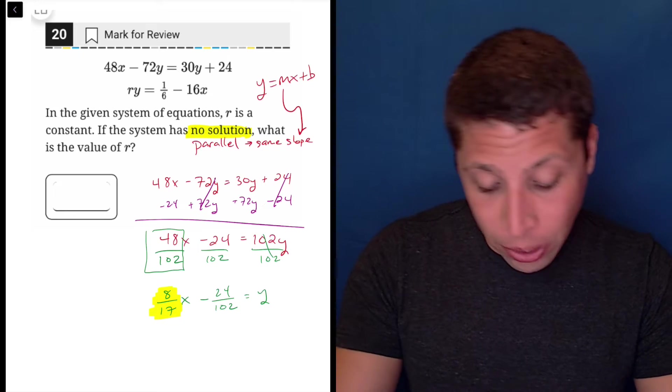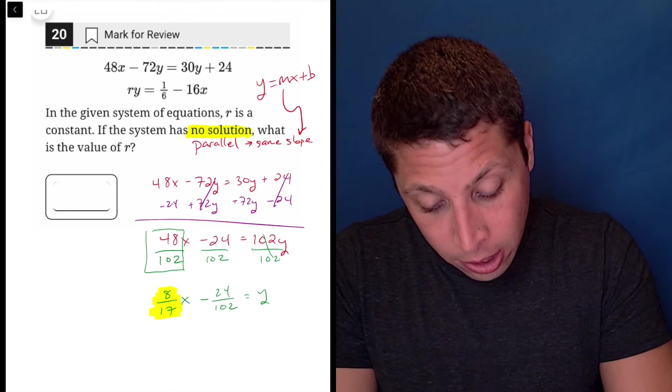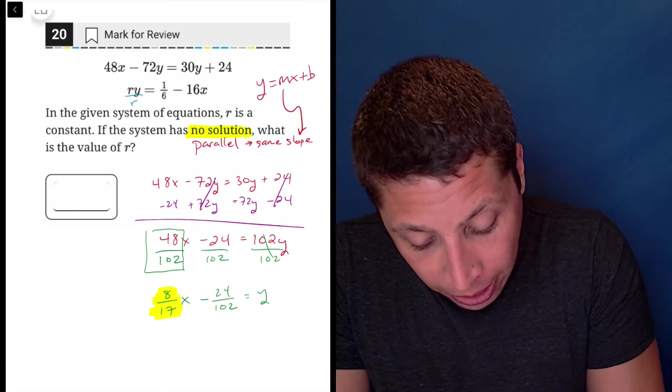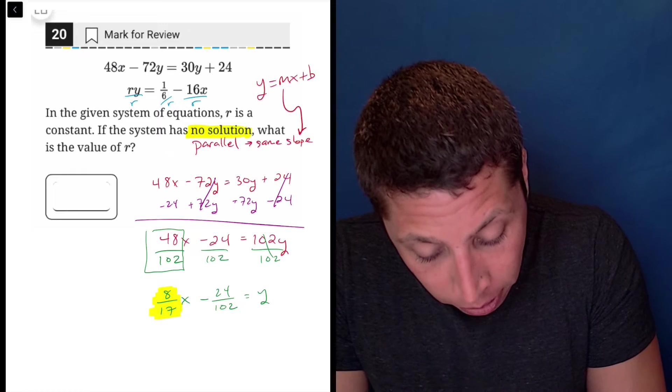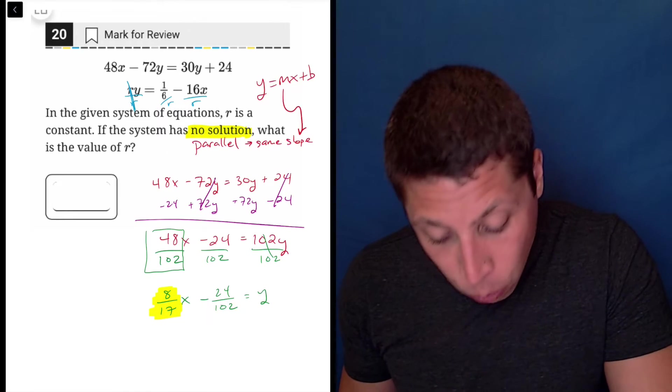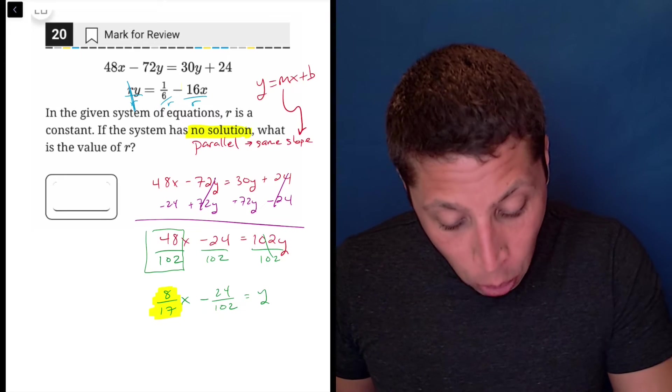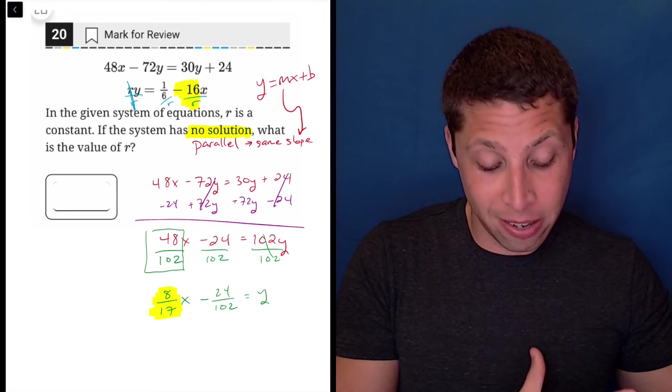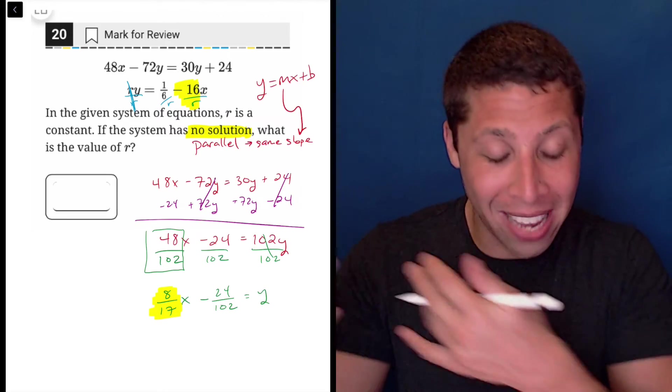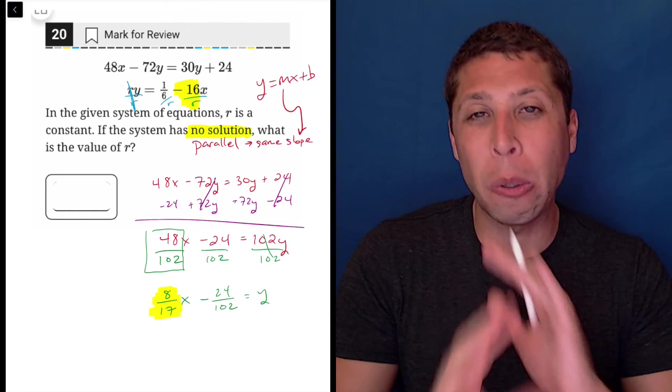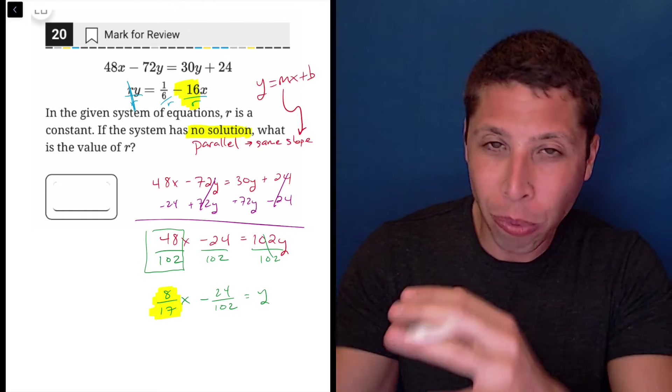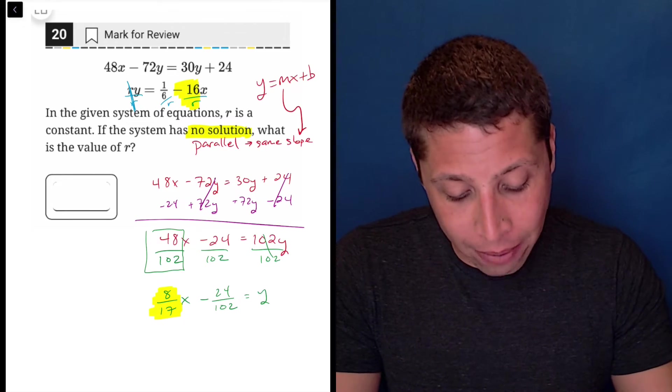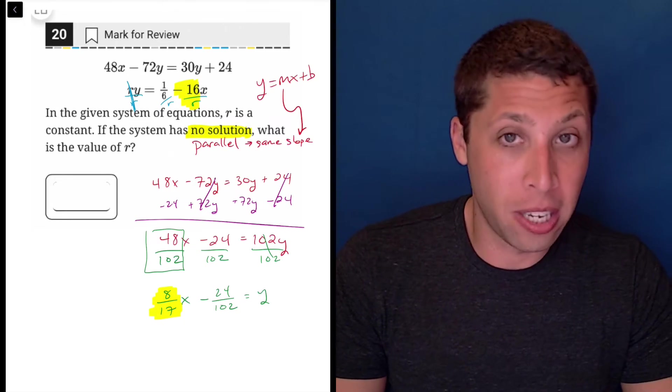So it's scary, but now we can do the same thing with the second equation to try to get that into y equals mx plus b. And luckily the only thing I have to move is the r. So I can divide everything by r to get y alone. And now again, I'm only focused on the slope. So this is a little jumbled because the x term is second, where normally y equals mx plus b has it first. But that, again, it doesn't bother me. I'm just focusing on the structure. I don't really care where things are placed. If I have y alone, then everything kind of makes sense to me. So now I have another slope, negative 16 over r.